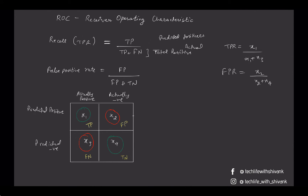We want our model to have the False Positive Rate at a minimum and the True Positive Rate at a maximum. So we want to minimize x2 and we want to maximize x1.